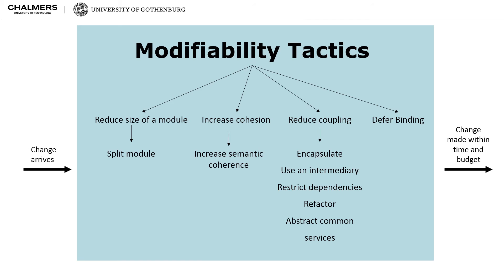The higher the cohesion, the lower the probability that a given change will affect multiple modules. The third category is to reduce coupling. Coupling refers to the degree to which software modules are dependent upon each other. High coupling is an enemy of modifiability. We could measure the probability that a modification to one module will propagate to other modules. The fourth category is deferred binding.